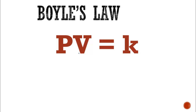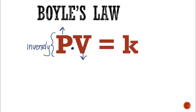Think back to Chapter 1 or Chapter 2 when we talked about the relationship between two variables. In this case, we are multiplying two variables and getting a constant. When two variables are multiplied, we find that they are inversely related to each other. That means as pressure goes up, volume goes down. If we change one, we end up changing the other in the opposite direction, and our constant remains the same.